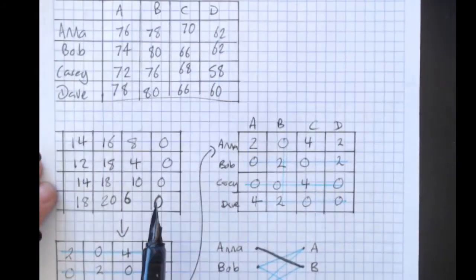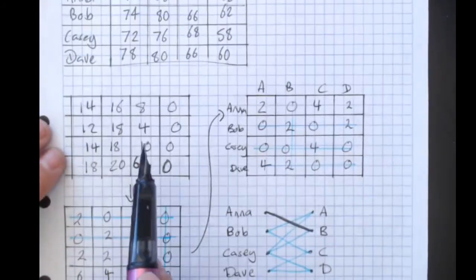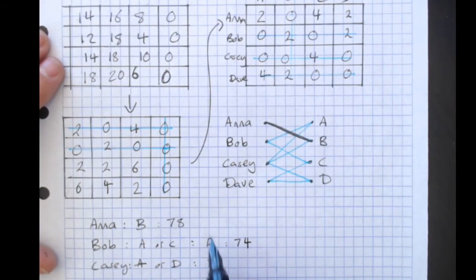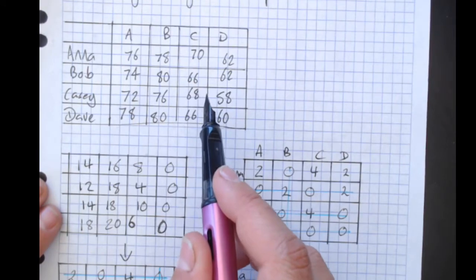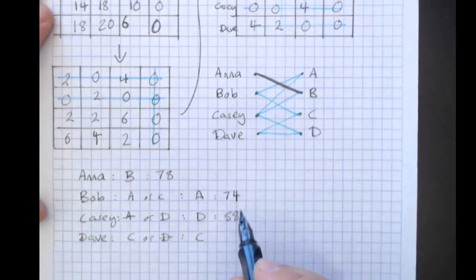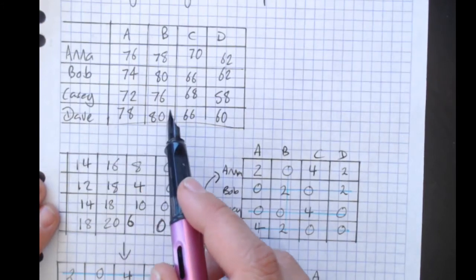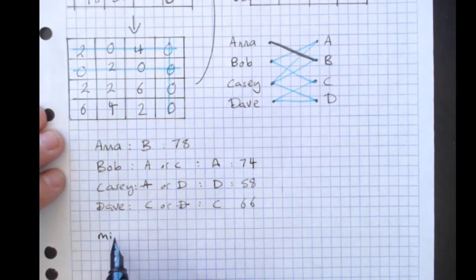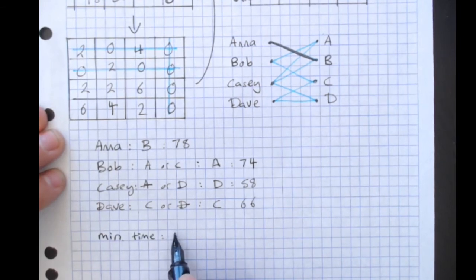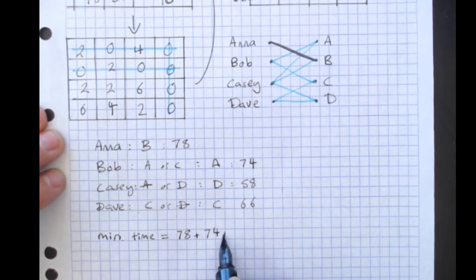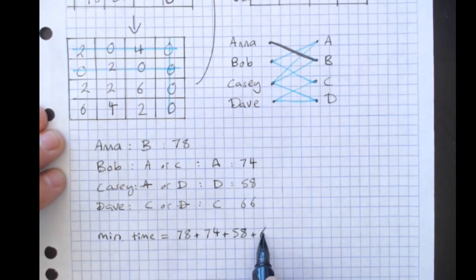Go back up to the original time. So Bob doing A, 74. Casey doing D, 58. Dave doing C, 66. So our minimum time is 78 plus 74 plus 58 plus 66.